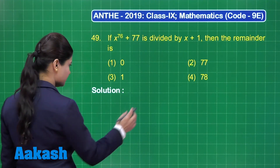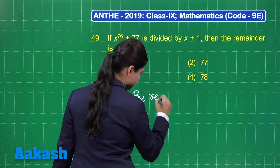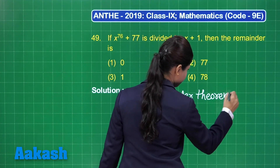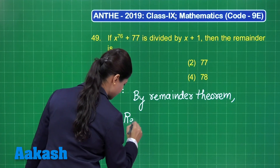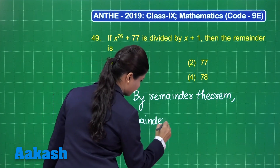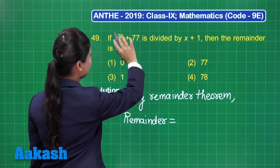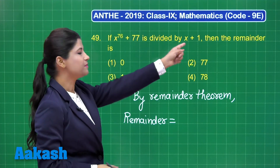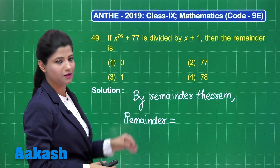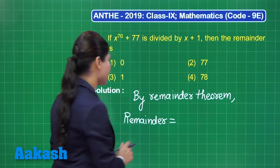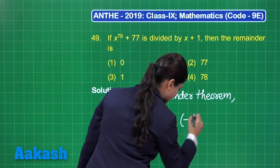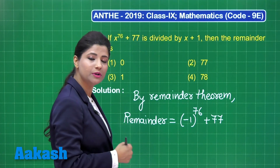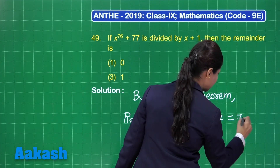If I apply the remainder theorem here, the remainder will be given by: you are dividing this quantity by x plus 1, and when x plus 1 is equated to 0, you get x equal to minus 1. To get the remainder, I substitute x as minus 1 — so it is minus 1 raised to the power 76 plus 77. Minus 1 raised to an even power gives the value equal to 1. So 1 plus 77 equals 78.